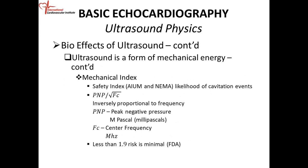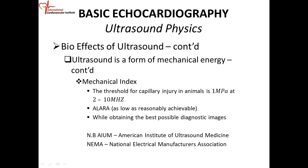Look at the side of the machine and you'll see MI — mechanical index — and TI, which means thermal index. The FDA recommends that when doing regular ultrasound you use a mechanical index of 1.9 or less to reduce mechanical injury. However, if you're going to do microbubble studies, you need a much lower mechanical index than 1.9.